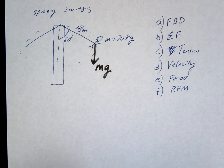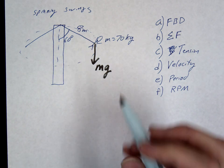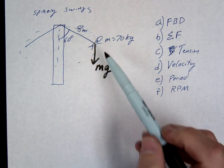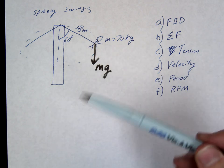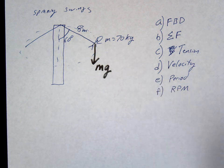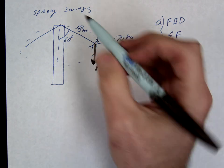Anything else? Centripetal force. So be careful. On your FBDs, you should never, ever have a centripetal force. That's going to describe something else. So what's the actual force acting on it? The tension.